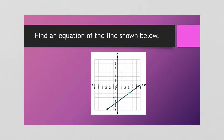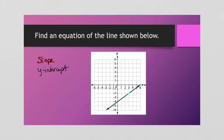All right, so look at this one. It says find an equation of the line shown below. Remember, what two pieces of information do you need? You need slope and you need the y-intercept. So check this out — let's look at the y-intercept first. That's looking at us, it's right here. So our y-intercept is (0, -4).